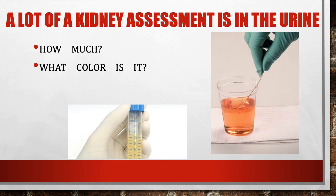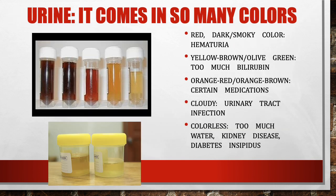Much of the assessment in a renal patient is in the urine — how much they're making and what color it is. We want to maintain at least 30 milliliters per hour on average. Color tells us a lot: red, dark, or smoky urine usually indicates hematuria. Yellow, brown, or olive green can indicate too much bilirubin. Orange, red-brown can happen with certain medications. Cloudy urine usually indicates infection.